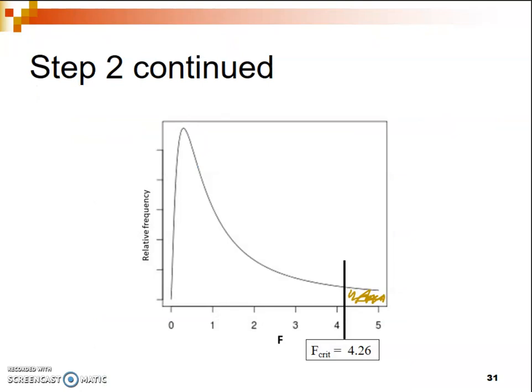Remember that the F distribution is a positively skewed distribution and all values are positive — there are no values below 0 because it's a measure of two variances, both of which are positive. We only have one tail, and that tail is on the positive side. We draw in our F critical value of 4.26 and shade in the critical region in that tail. Our critical region is always the tail marked off by that value we looked up.